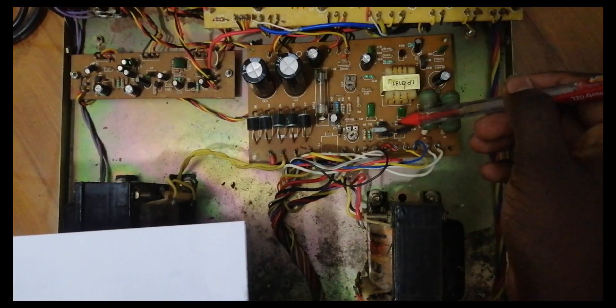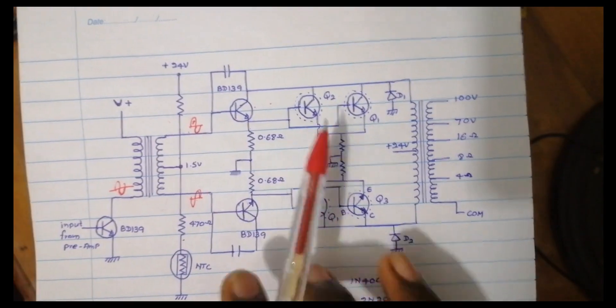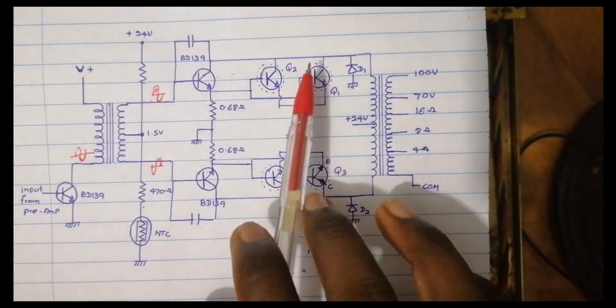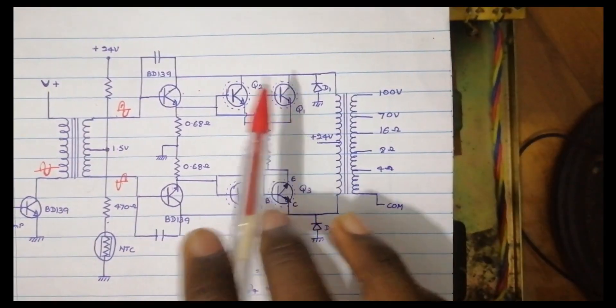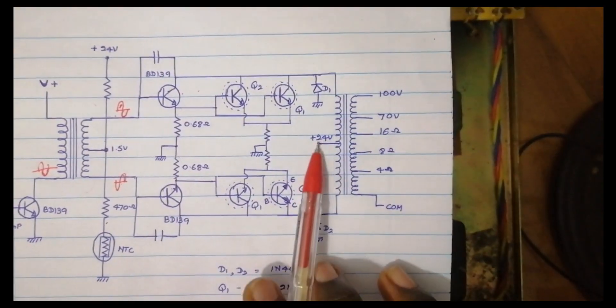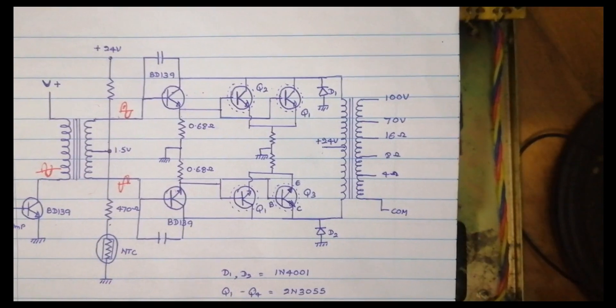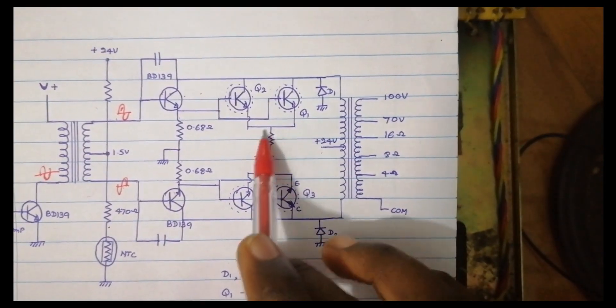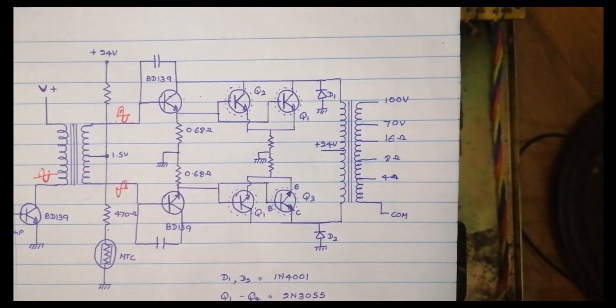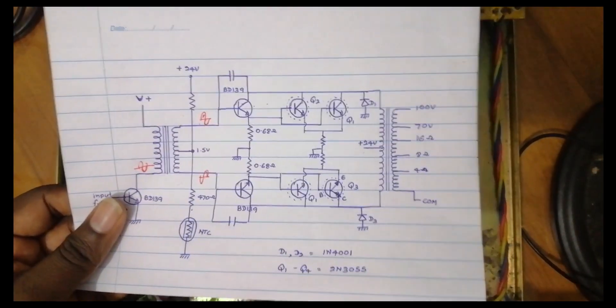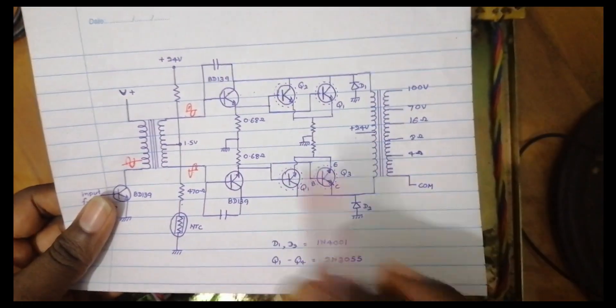These are the resistors. This is the emitter section. This is the output stage — this is the base, the collector pins, and the output transformer. The output transformer is available at the F position. This is the circuit — this is the transistor that is very good.